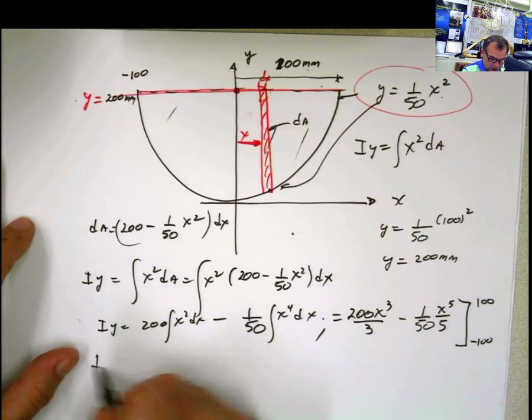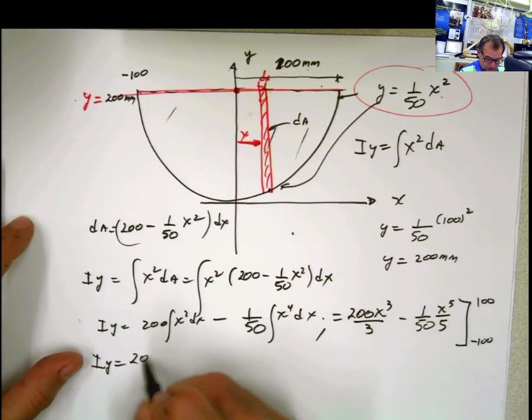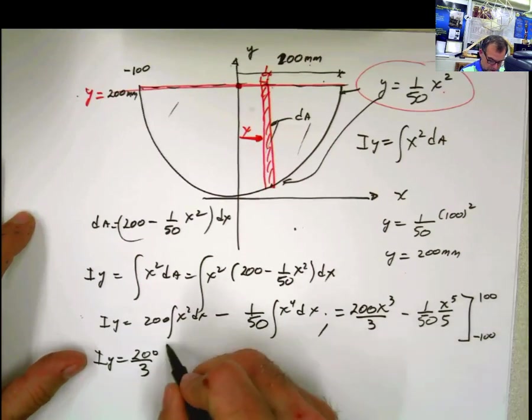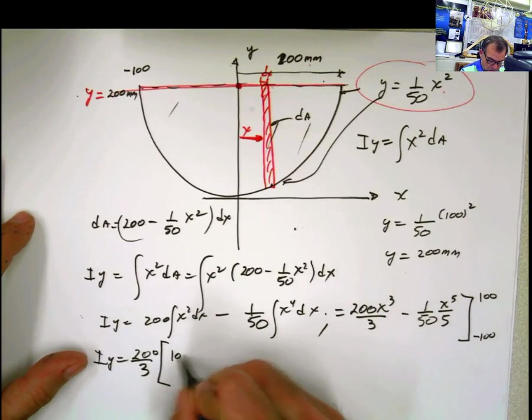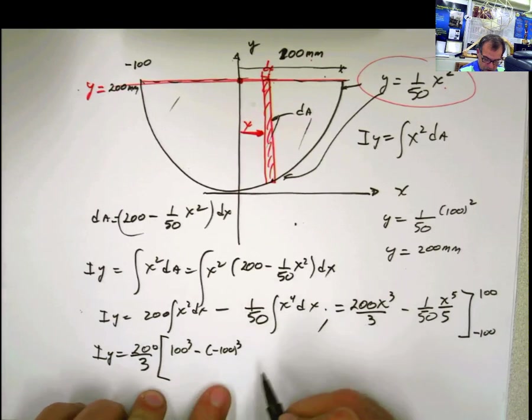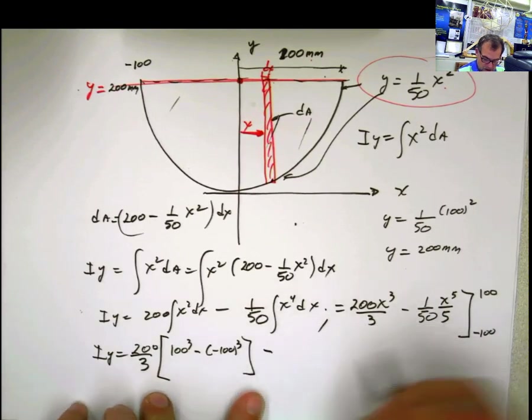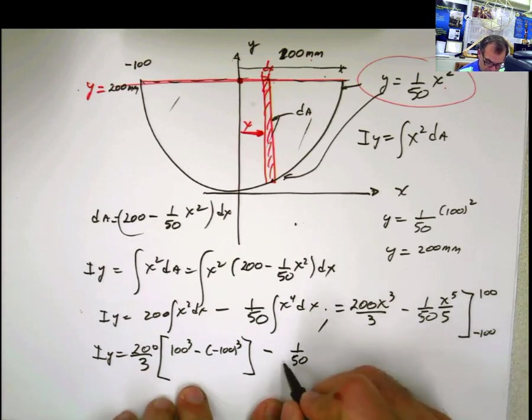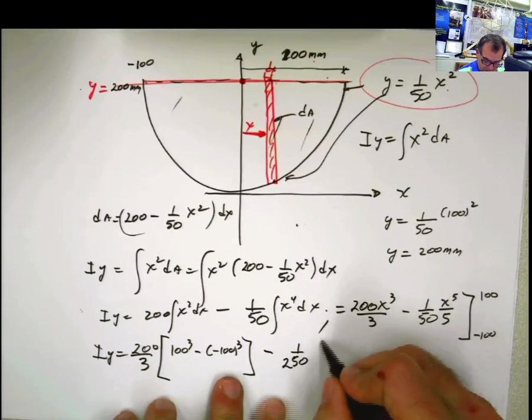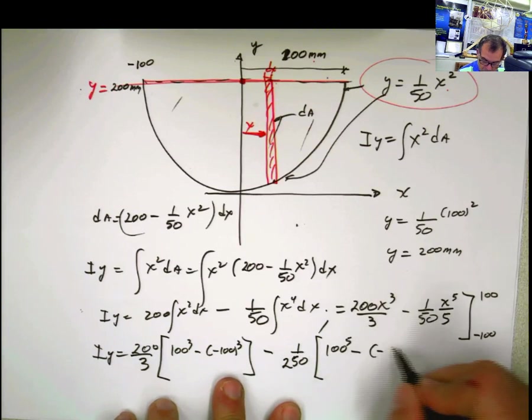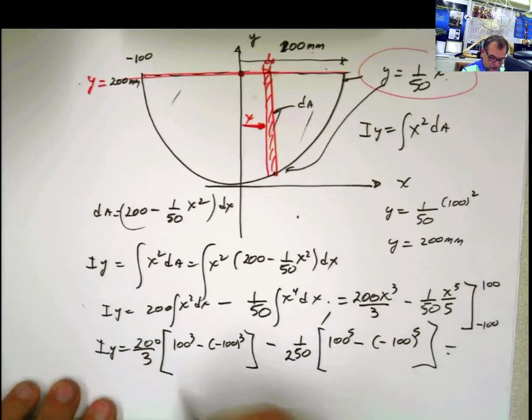And then we solve for this. I sub y equal, this is going to be 200 divided by 3, that multiplies this x to the third, which is going to be here. 100 to the third minus this other here, minus 100 to the third. That's this part. And then I have this minus here, and this minus here, 1 over 50. And then I have the, oh, not 50. 50 times 5 is 250. And then this is going to be x to the fifth. So it's going to be 100 to the fifth here, minus 100 to the fifth. And that's going to be equal to I sub y.